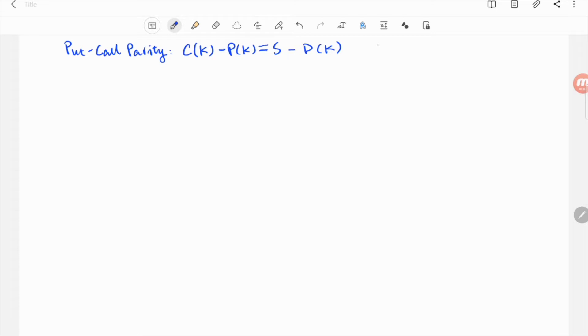The put-call parity says the price difference between a call and a put with the same strike and time to maturity equals the difference between the underlying asset and the discounted strike at any given time.